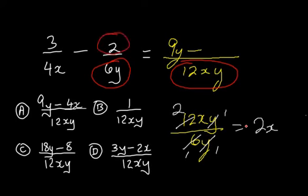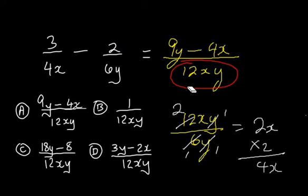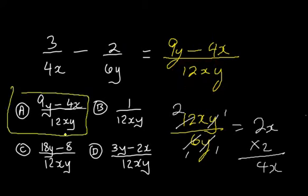We're going to multiply that result that we got by 2. So, 2x times 2 will give us 4x. And so, 9y minus 4x will be the solution in the numerator. We cannot take 4x from 9y since they're unlike terms. Therefore, our solution will be 9y minus 4x over 12xy.